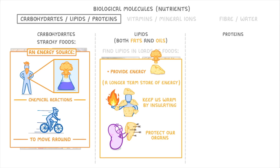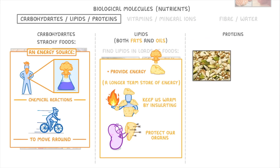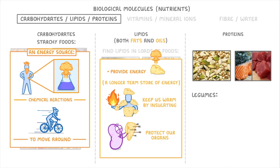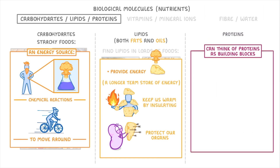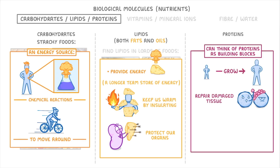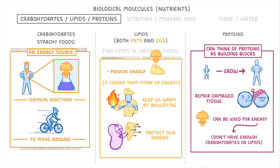Finally, proteins are also found in a range of foods, but particularly in nuts and seeds, meat and fish, and also legumes, meaning things like lentils and beans. You can think of proteins as building blocks, so we need them to grow and to repair damaged tissue. They can also be used for energy, but only really in emergencies if we don't have enough carbohydrates or lipids.